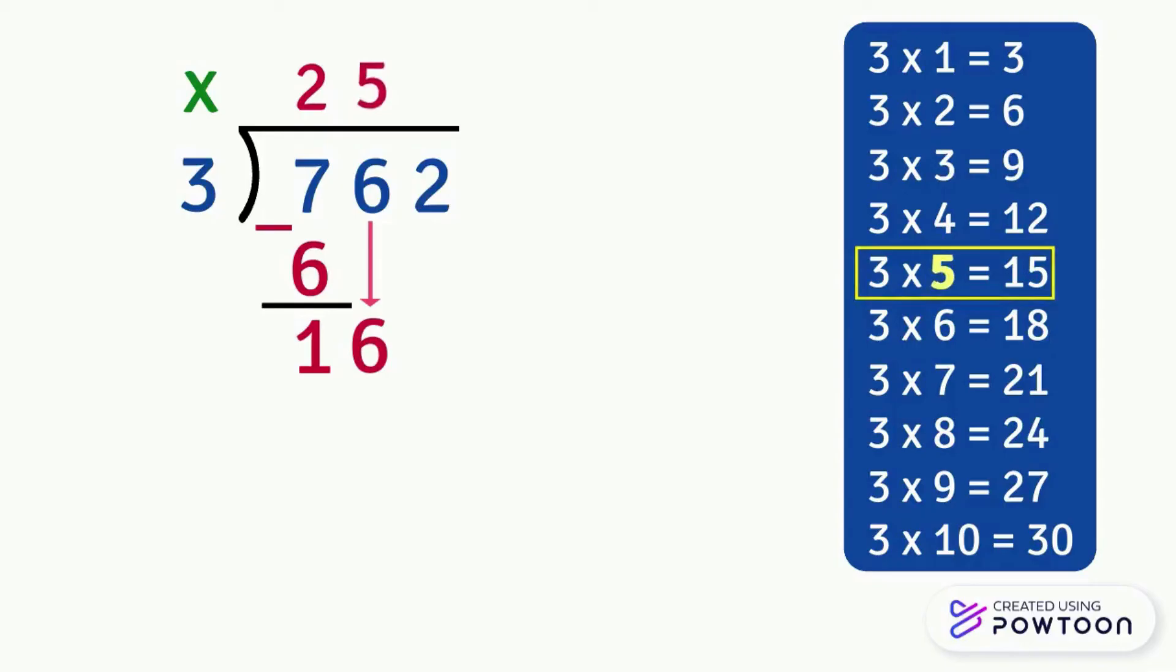We write 5 in the quotient next to 2 and above the 6, then we multiply 5 by 3. 5 times 3 equals 15. Then write 15 under 16 and we subtract 16 minus 15 equals 1.